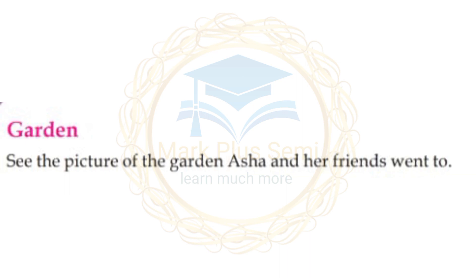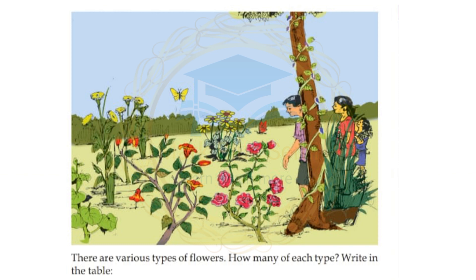Next section: Garden. See the picture of the garden. Asha and her friends go to the garden. There are various types of flowers. How many of each type?